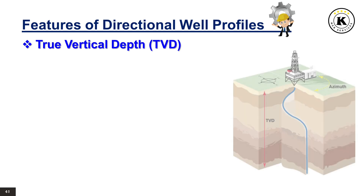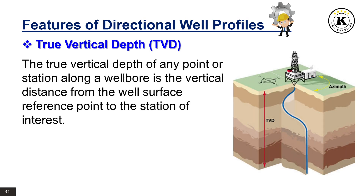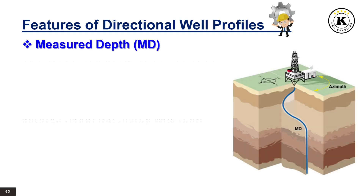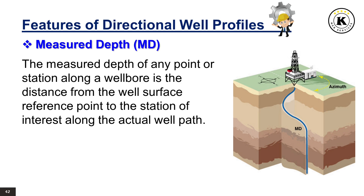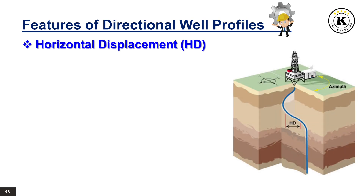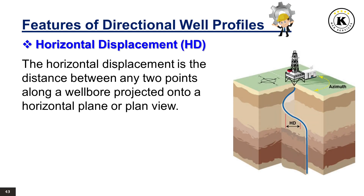True Vertical Depth: The true vertical depth of any point or station along a wellbore is the vertical distance from the well surface reference point to the station of interest. Measured Depth: The measured depth of any point or station along a wellbore is the distance from the well surface reference point to the station of interest along the actual well path. Horizontal Displacement: The horizontal displacement is the distance between any two points along a wellbore projected onto a horizontal plane or plan view.